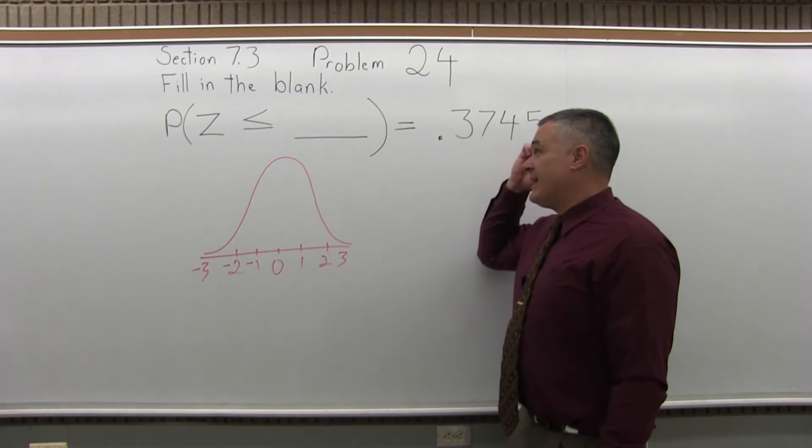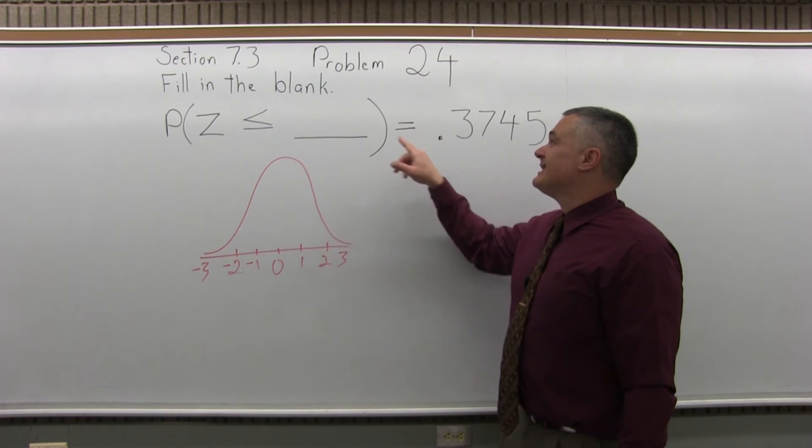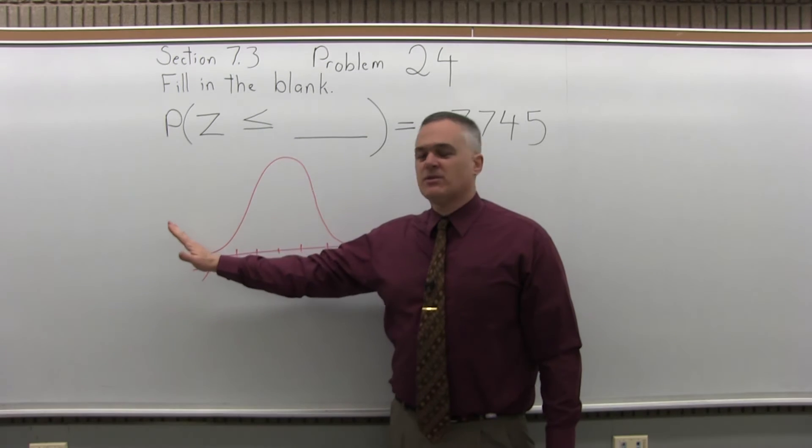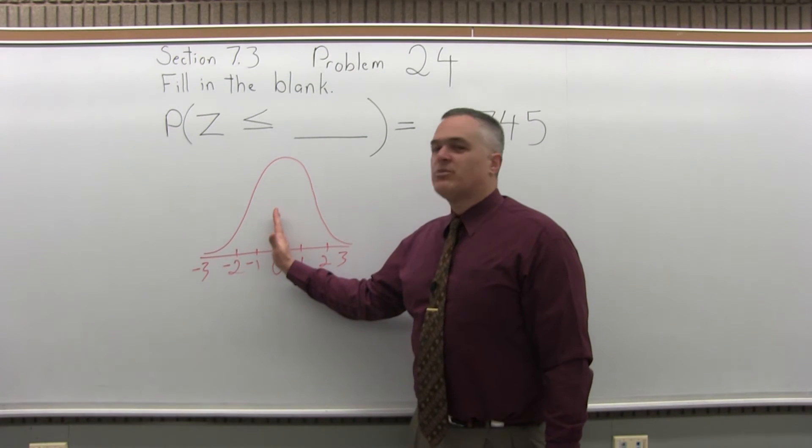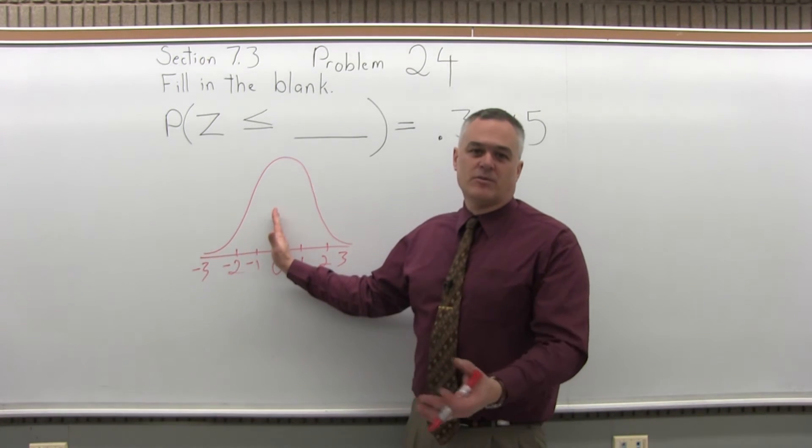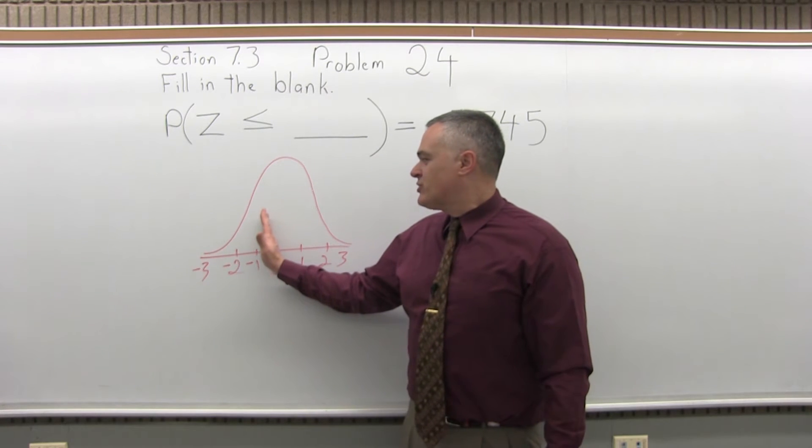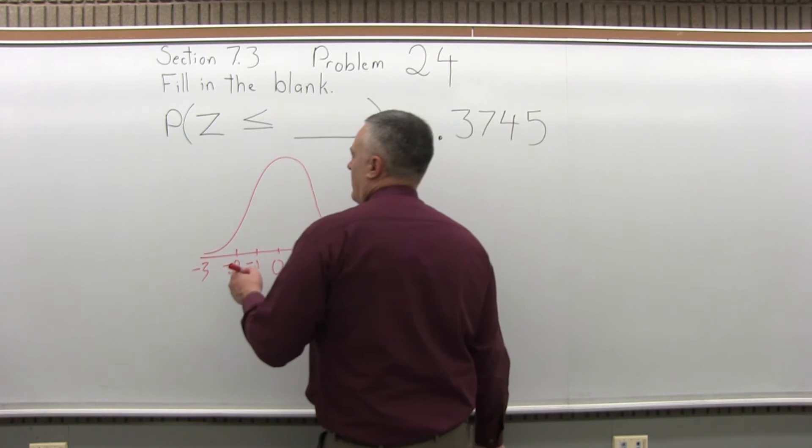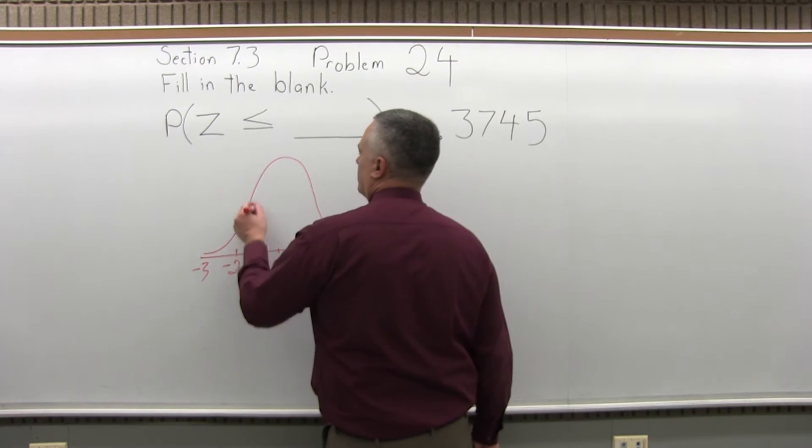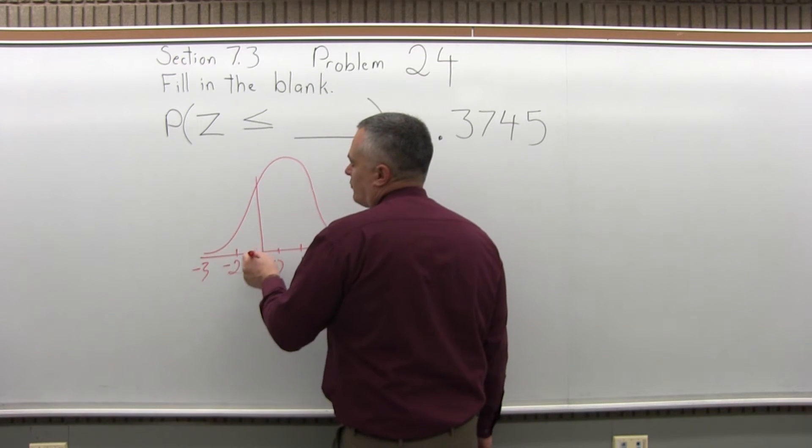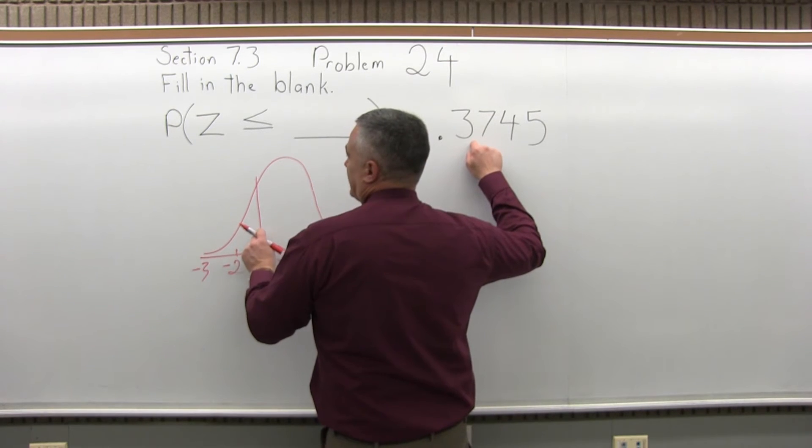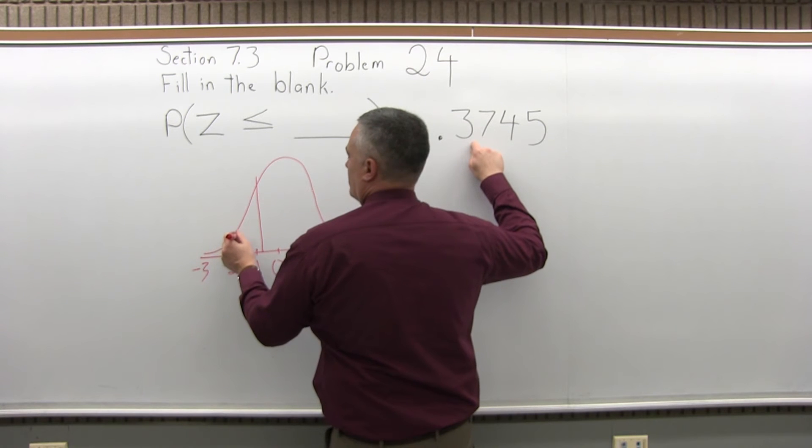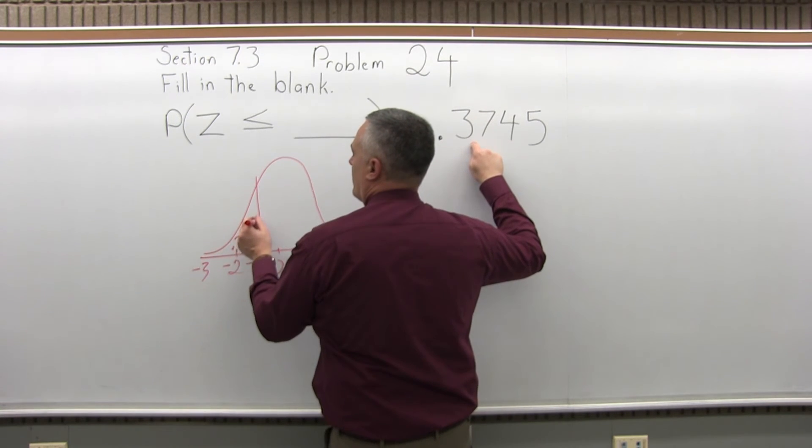Now they're saying the probability that Z is less than some value is .37 something. That's telling me it's a little to the left of the middle, because if it's right at the middle, the probability of being less is .5 or .50. So .37, it's going to come over a little bit further to the left, let's say somewhere around there. So the probability of being less than this number is .3745.